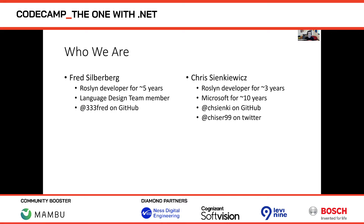My name is Christian Kevich. I've been on the Roslyn team for about three years, but I've been at Microsoft for nearly 10 years wearing different hats. I'm at jsenki on GitHub where you'll see me on the Roslyn repo, and on Twitter I'm chisa99. I also want to mention that working from home means my dog might make a guest appearance if the mail carrier arrives.